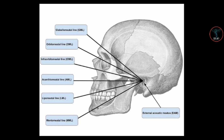The lips-meatal line is the line drawn from the acanthion — the point below the tip of the nose — to the external auditory meatus. You can see it here. Our last line is the mentomeatal line.